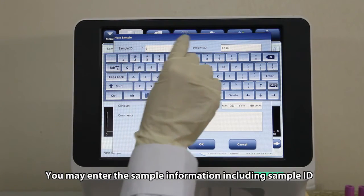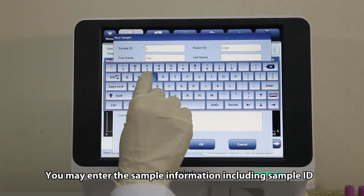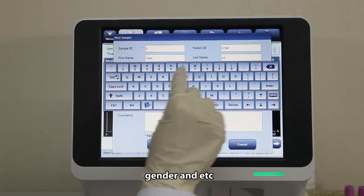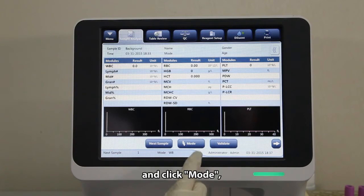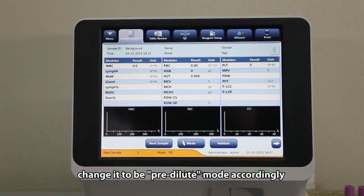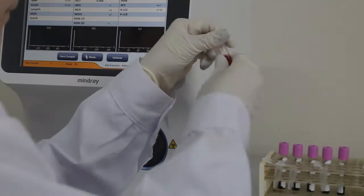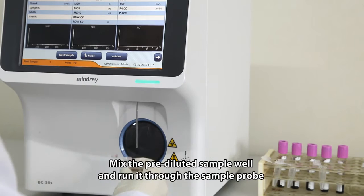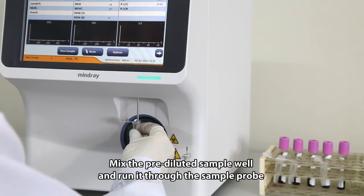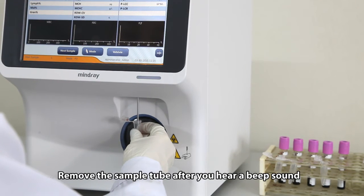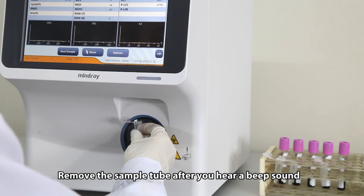You may enter the sample information including sample ID, name, age, gender, and click mode. Change it to pre-dilute mode accordingly. Mix the pre-diluted sample well and run it through the sample probe. Remove the sample tube after you hear a beep sound.